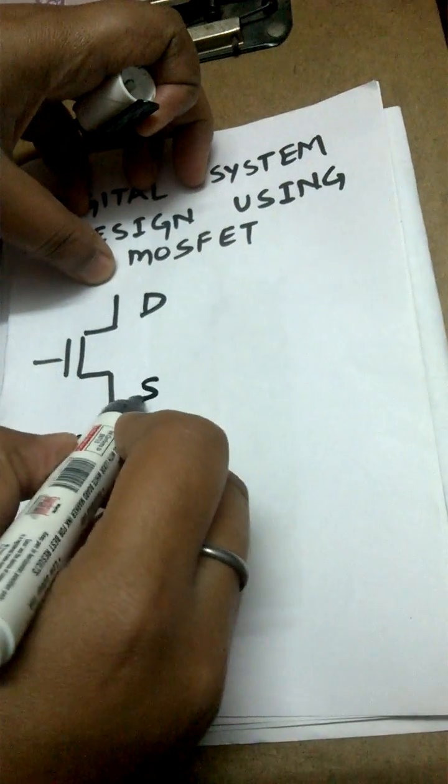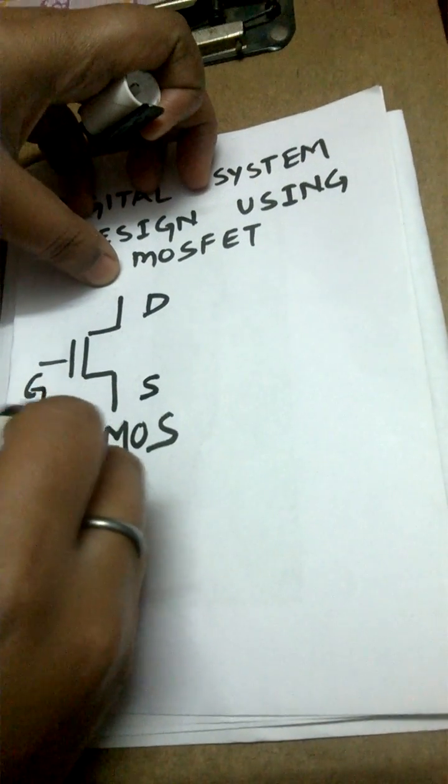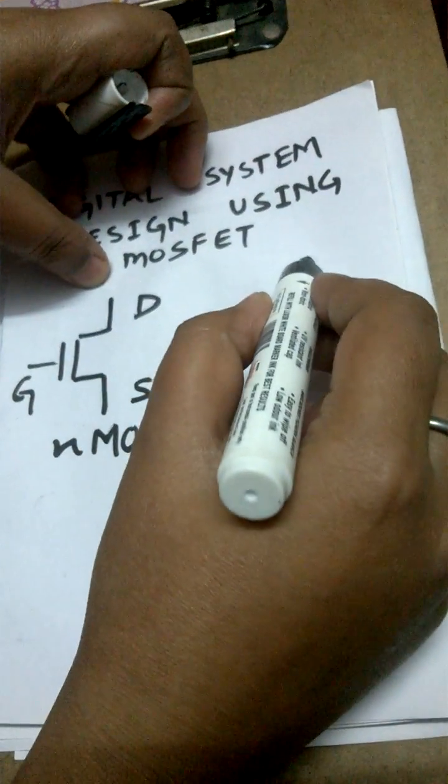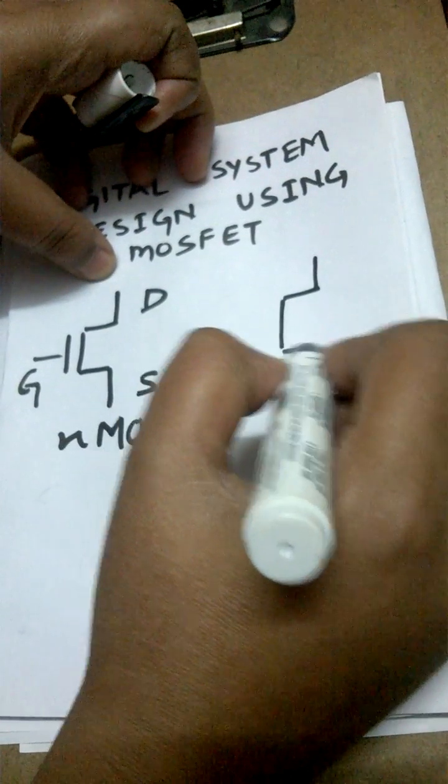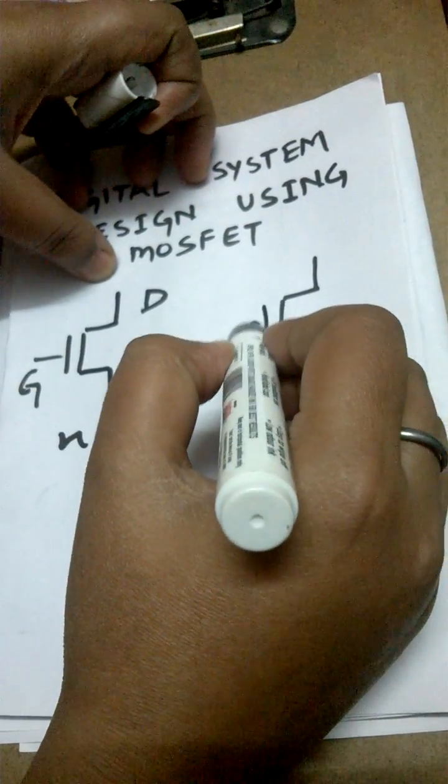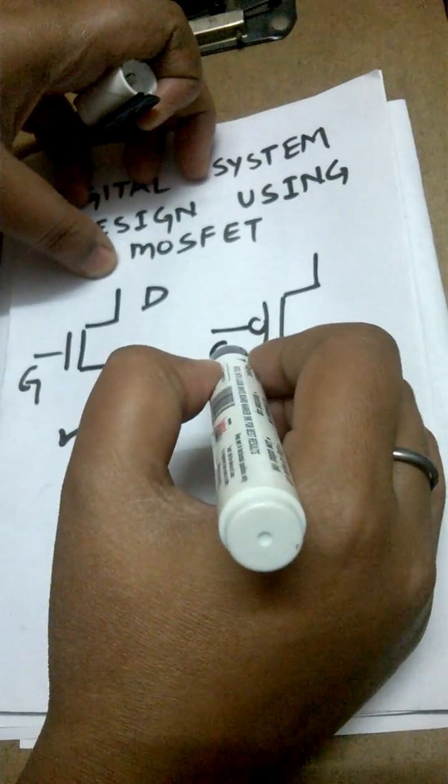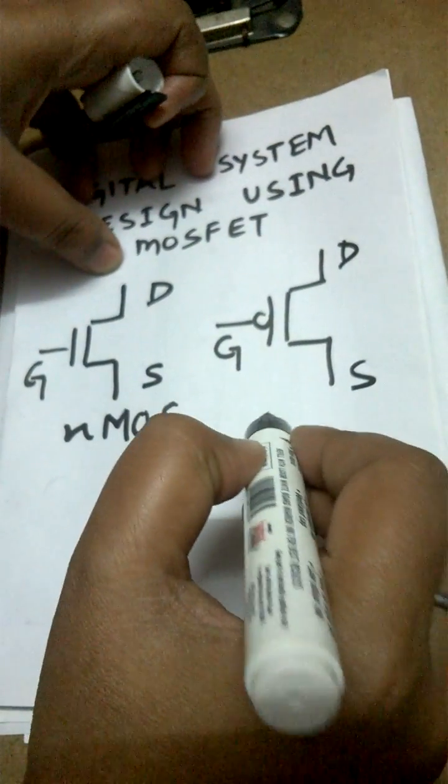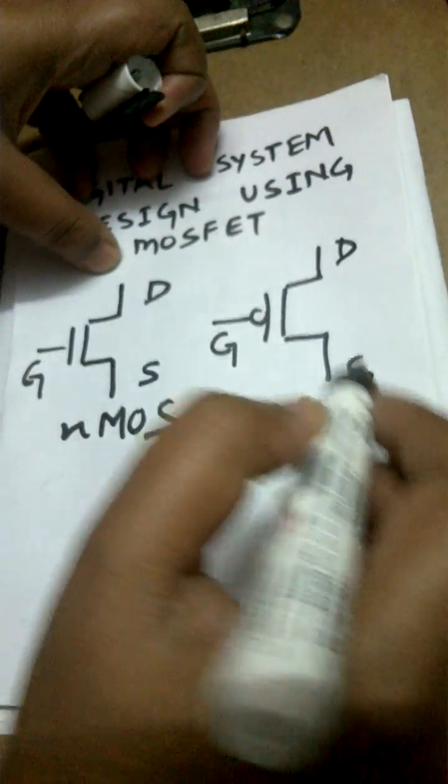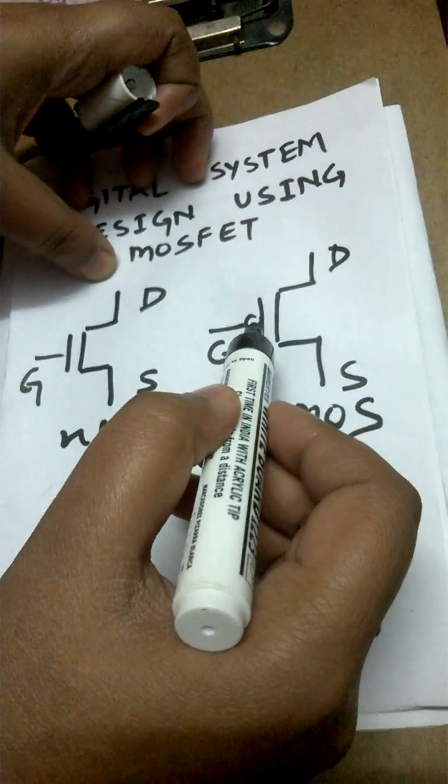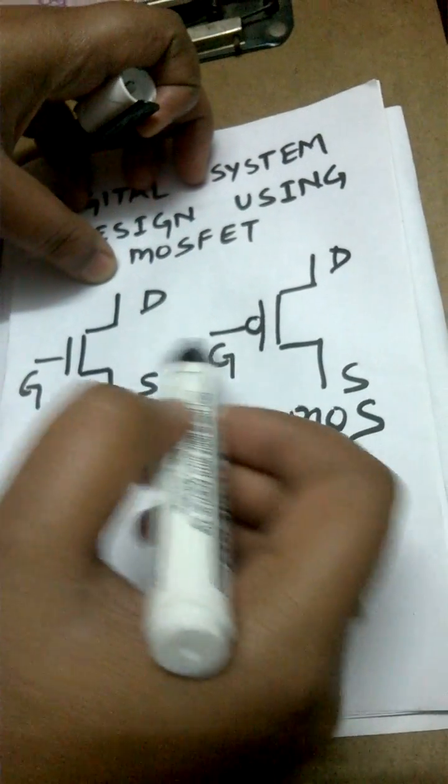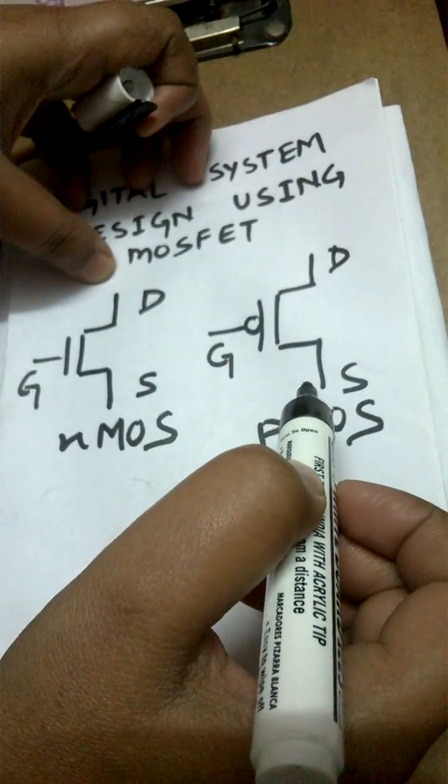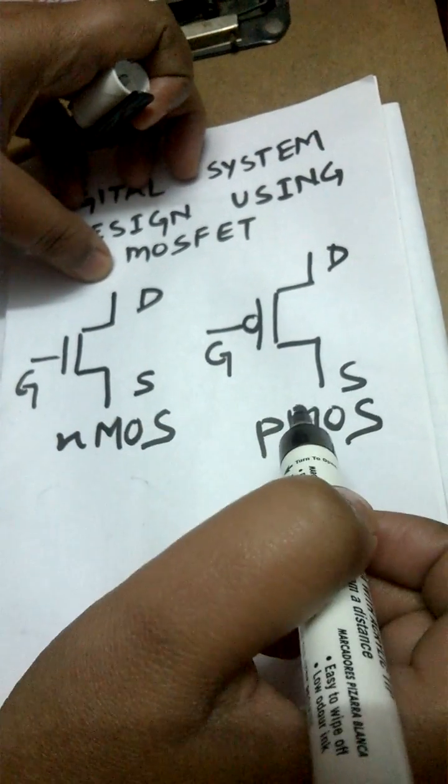Similarly, we will be studying a device that is the PMOS. PMOS also has three terminals: gate, drain, and source. As you can notice the difference between the two, there is a bubble symbol drawn to represent the PMOS. We will be using these two devices to design any digital system or any digital logic gate.